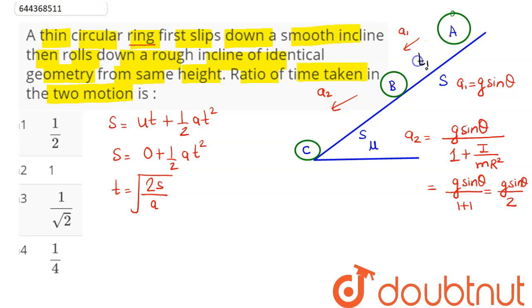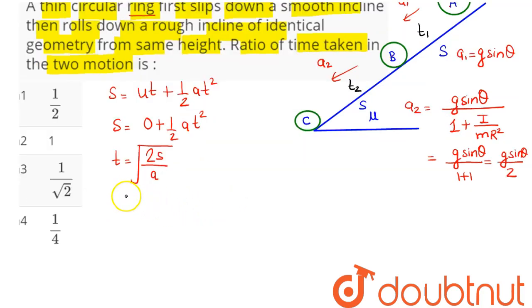So we can see here, this time is T1, this time here is T2. So we need to find the ratio of the times. So the time taken in A to B divided by time taken in B to C,